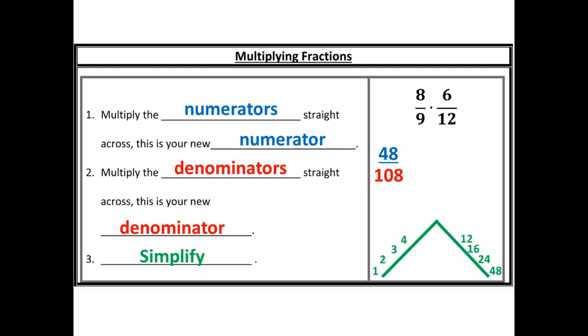Divide by five — nothing. Divide by six gives me eight. Divide by seven — nothing. Divide by eight, I'm on the other side. So now I just need to check which of these factors is the biggest factor that will divide evenly out of 108.